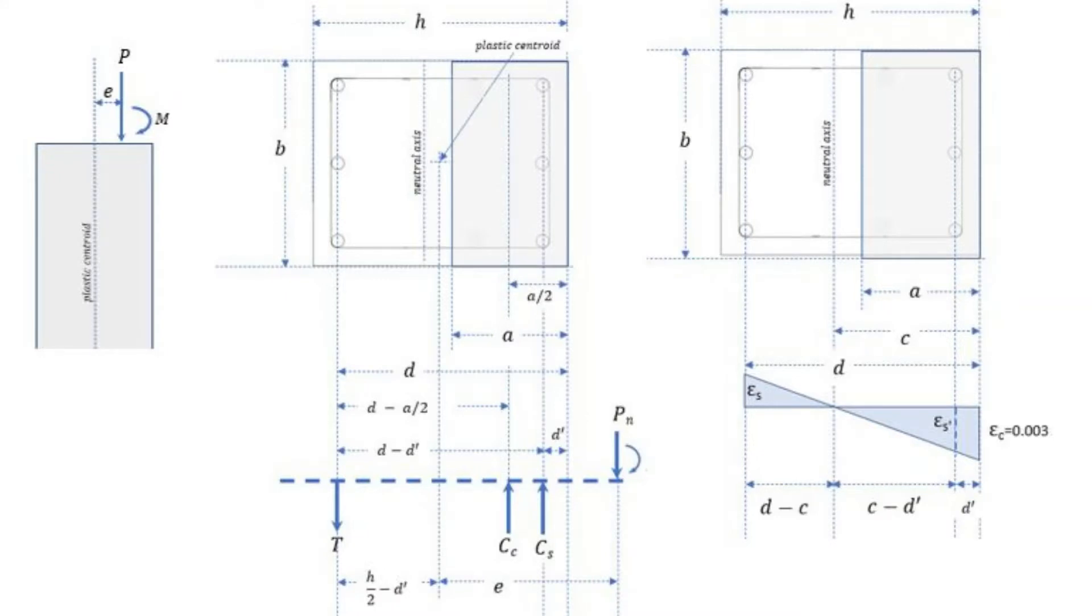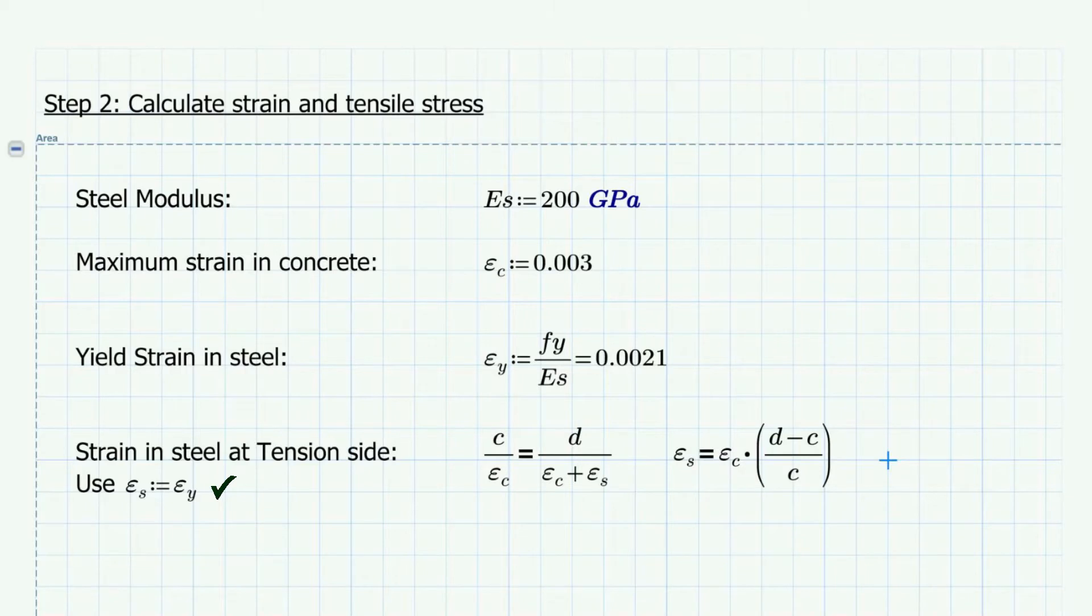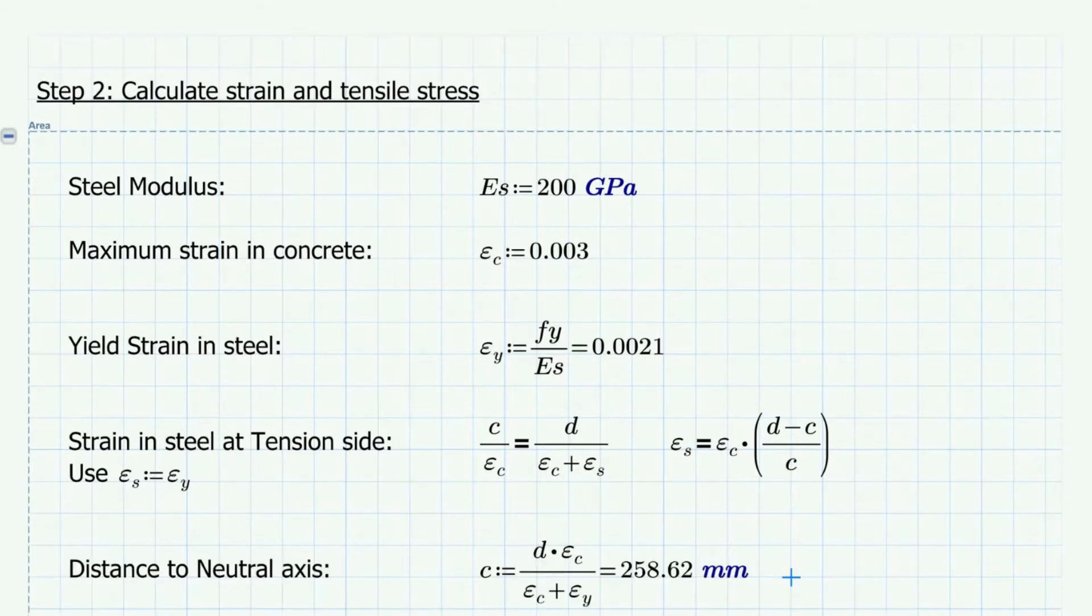The strain in steel at tension side can be taken by ratio and proportion. Since we are after the balanced failure, then we shall use strain in steel equal to yield strain. This will give us a value of C, 259 mm.